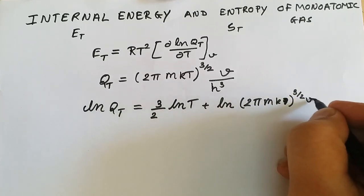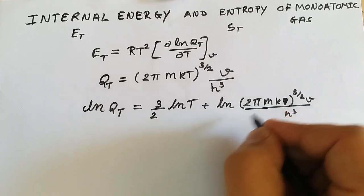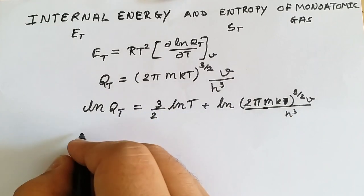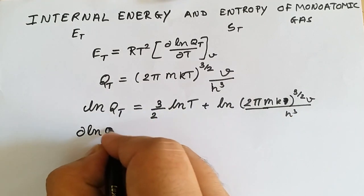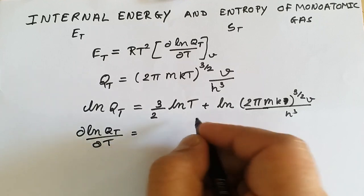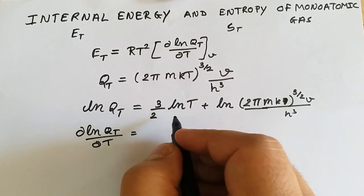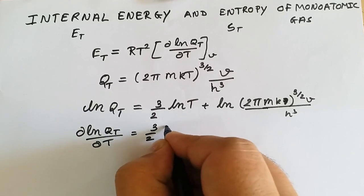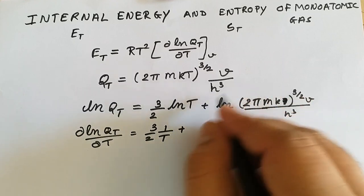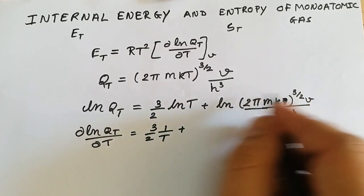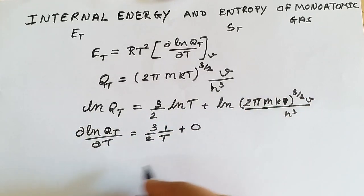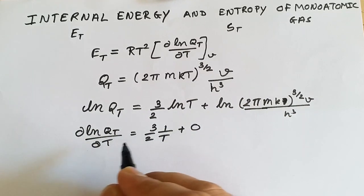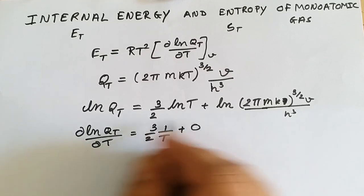Differentiating with respect to temperature, we have d(ln q_t)/dT. The differentiation of ln T is 1/T, giving us (3/2) × (1/T). All other terms are constants, so their derivatives are zero. Therefore, d(ln q_t)/dT = 3/(2T).